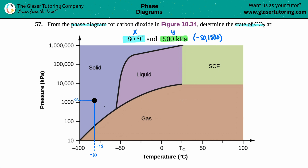We're in the dark blue area, which is the solid region. So at negative 80 degrees Celsius and 1500 kilopascals, carbon dioxide will be a solid. Pretty easy! Thanks for watching — hopefully this helped. Good luck on all your tests and quizzes, and have an awesome day!